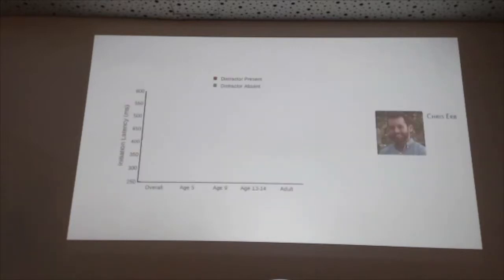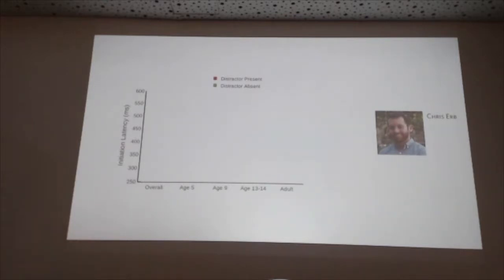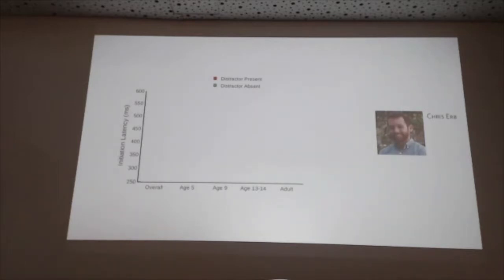I should give credit — this work was done in collaboration with Chris Erb, who has a developmental background and knows about working with kids. We presented this task where half the time a distractor is present and half the time absent. Starting with initiation latency: if you combine all the data, you don't see any difference. In general, the presence of a distractor doesn't change how quickly people start their movement.